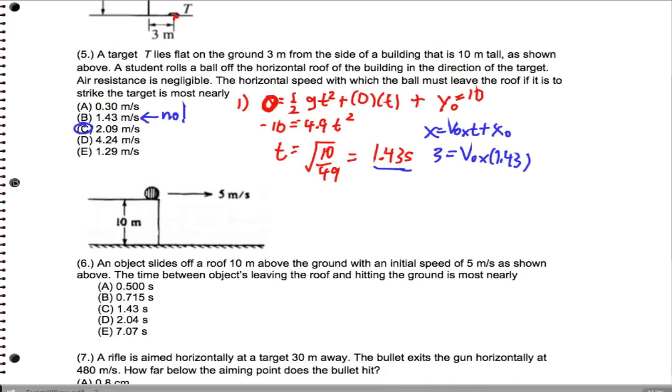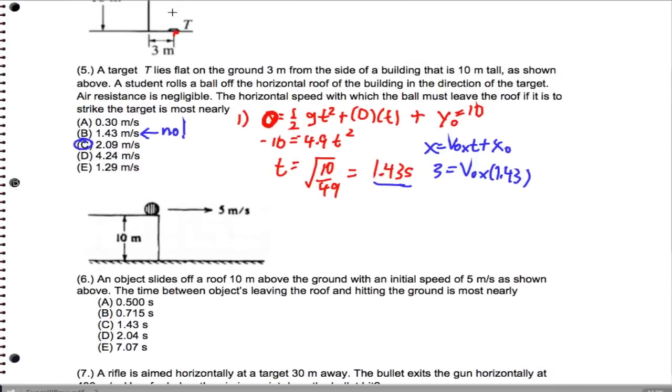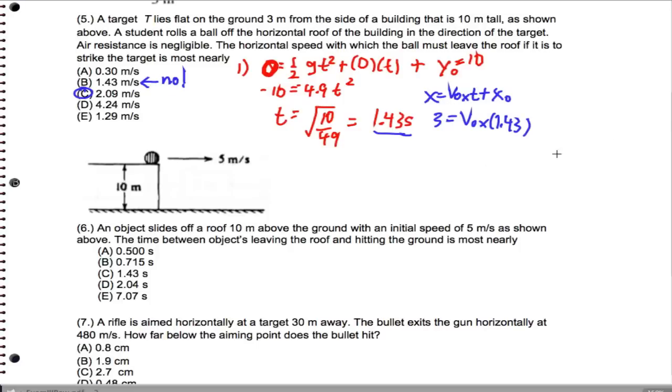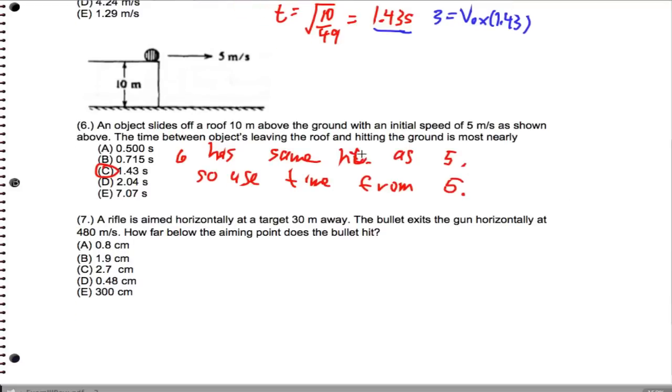Now the beauty of this is that I've saved my answer. If you notice in question 5 and 6, we're falling from the same height. So 6 has same height as 5. It's actually a trick question and I can just use the time from 5. So I hope that helps.